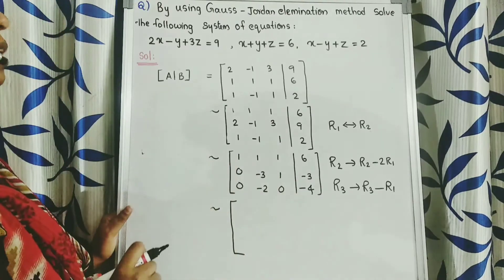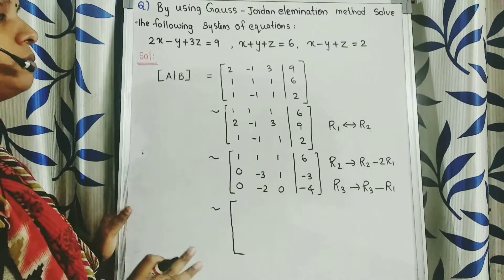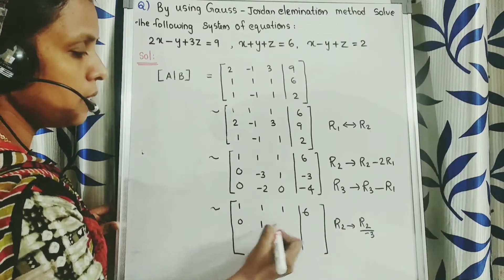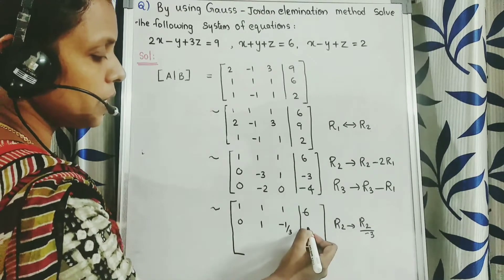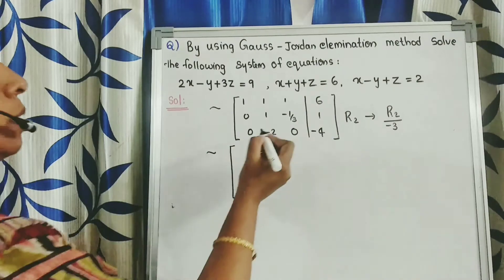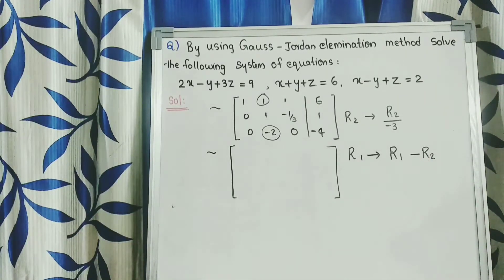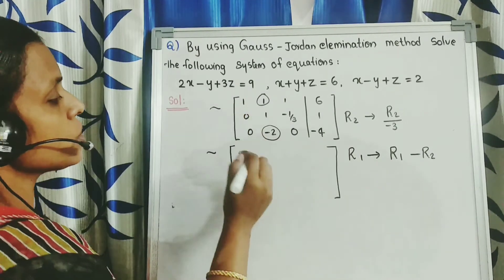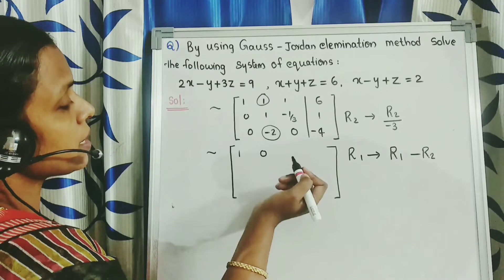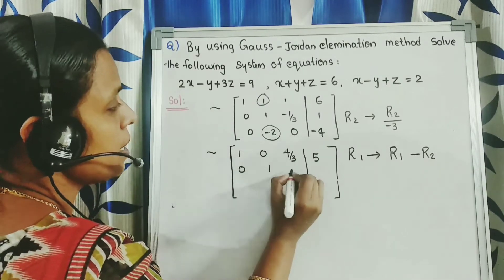Next consider the second row. The first non-zero element is minus 3. Convert it into 1 using the transformation R2 tends to R2 divided by negative 3. We get row 2 as: 0, 1, negative 1 by 3, 1. Next convert the entry in R1 to 0 using R1 tends to R1 minus R2. We get row 1 as: 1, 0, 4 by 3, 5.